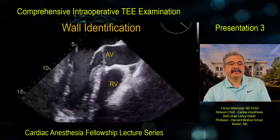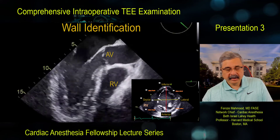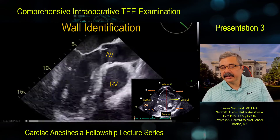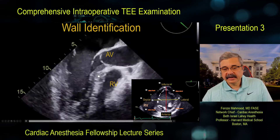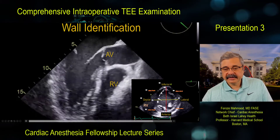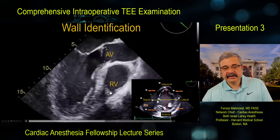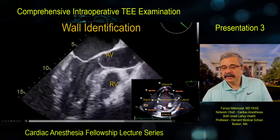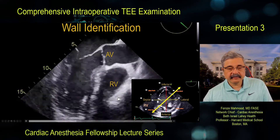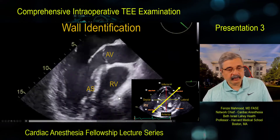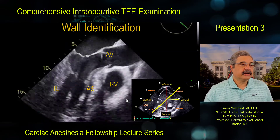In the mid-esophageal long-axis view: the right ventricle implies the septum. Since we are looking at the aortic valve — which is more anterior — this is the anteroseptal wall. The wall across from the anteroseptal wall is the inferolateral wall. In this specific view, we are looking at the anteroseptal wall and the inferolateral wall. In the mid-esophageal four-chamber view: the right ventricle defines the interventricular septum. Since we are not seeing the aortic valve, this is more likely the inferoseptal wall, and across from it is the anterolateral wall.